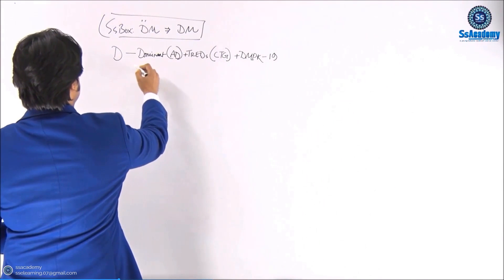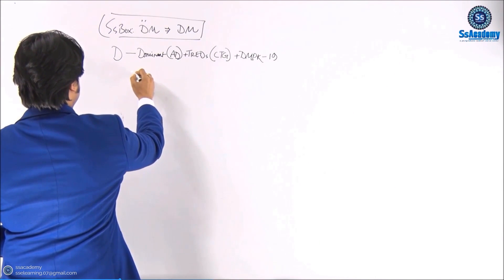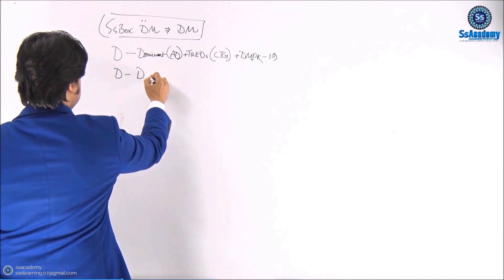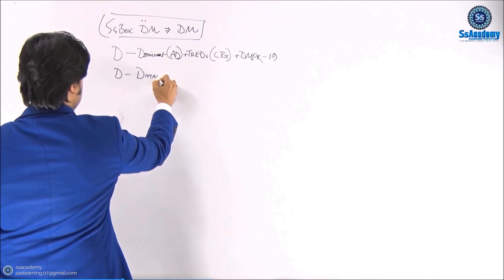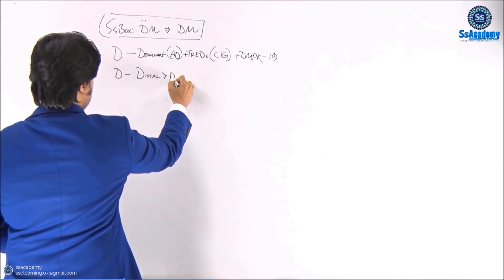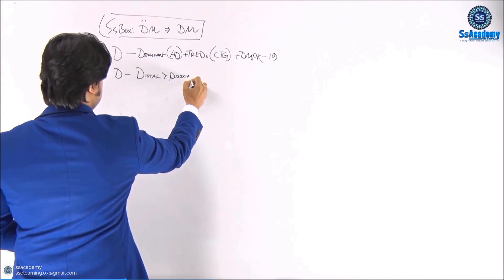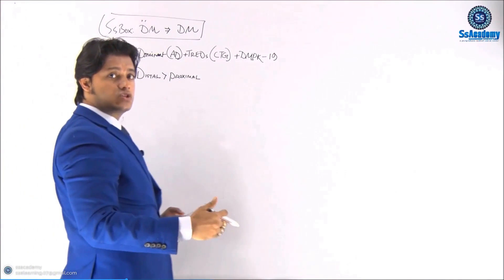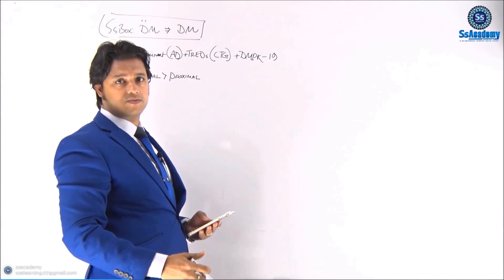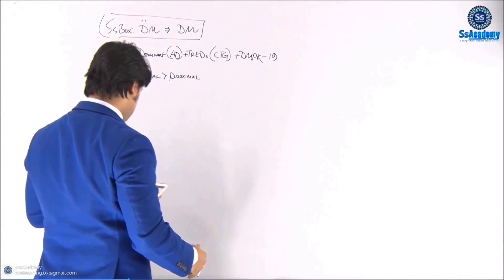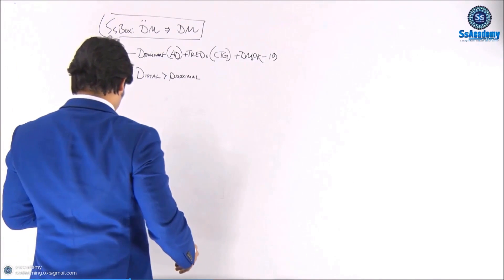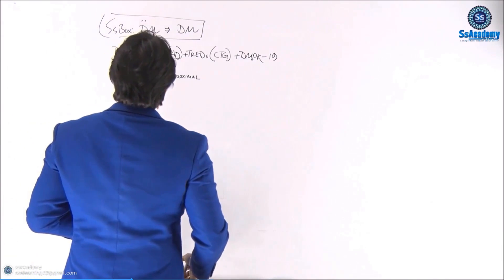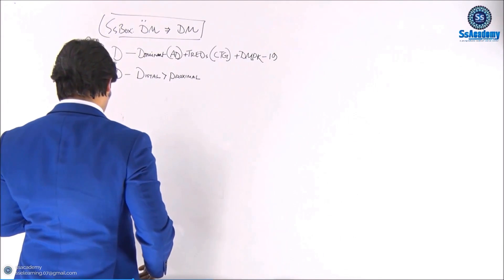Next, D is really important: it stands for the distal muscles being more prominent than the proximal. Distal muscle groups are initially affected, then there are the proximal groups of muscles.